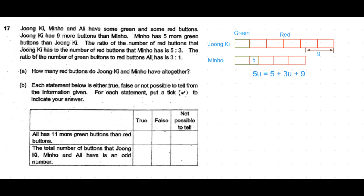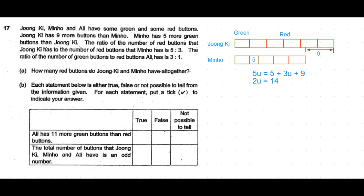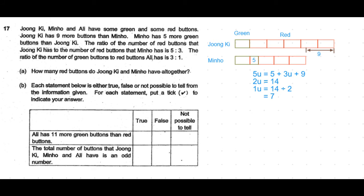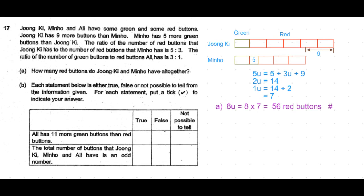So five units of red buttons for Junki equals the three units of red buttons of Minho plus nine. The difference between five units and three units is two units, which equals five plus nine, giving us 14. So one unit equals seven. The total is eight units, so eight times seven equals 56 red buttons. That's the answer to Part A.